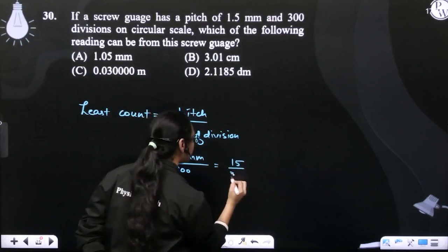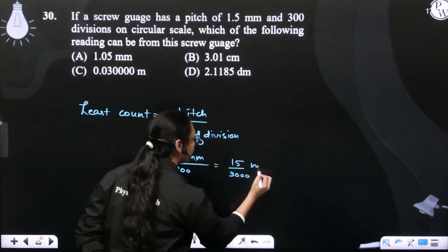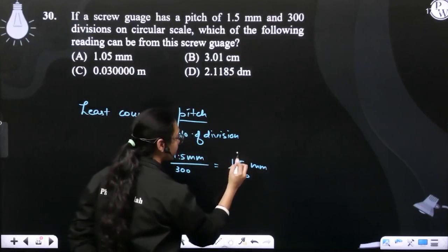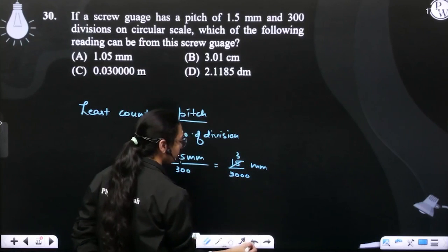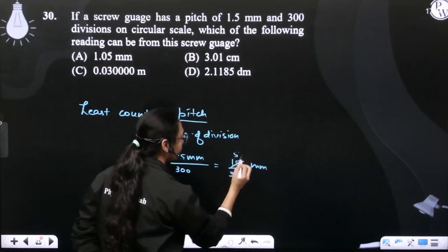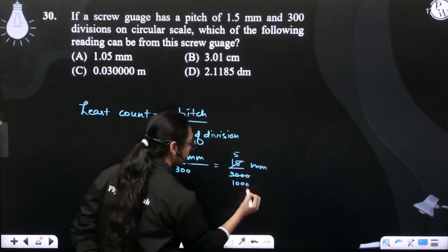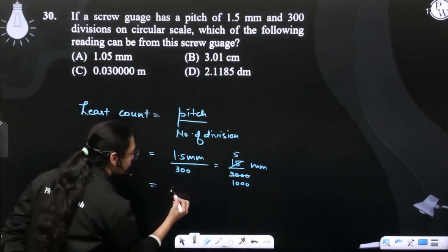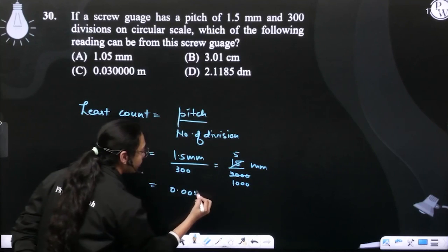15 upon 3,000 mm. I have taken one decimal down. 5, 3's are 15, sorry, 3, 5's are 15, 3,000. Okay, so this is how we have it. 0.005 mm.